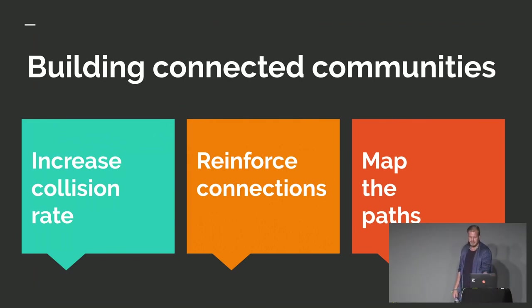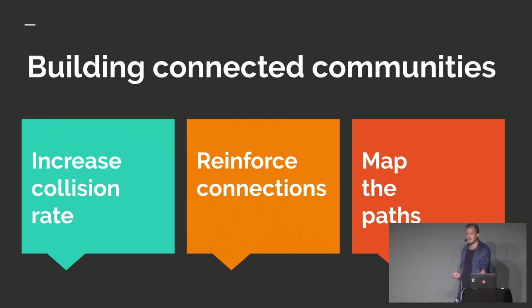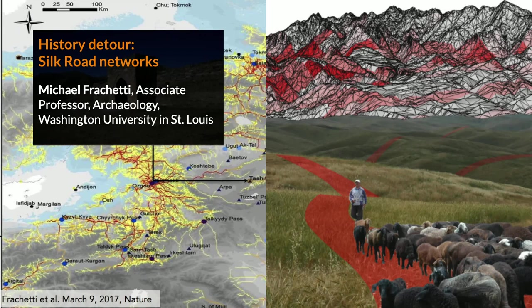I'm going to talk about a few design principles I've found useful when building tools for online communities. I'll make the case that it's possible to nurture a connected community online by trying to build, maintain, and map a dense network. We'll go through three steps: increase the collision rate, make sure good connections have a chance to last and grow, and finally map out the paths so people can find their way to what they need.